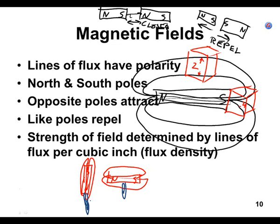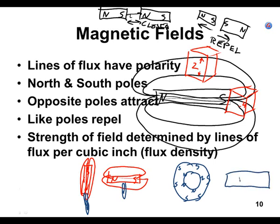A student asks: what about a circular or donut-shaped magnet? If this is north on one side and south on the other, I've never seen this kind of magnet, but if I look at it from the side with a hole in the middle, I'd guess the lines of flux come out of one pole and go into the other.